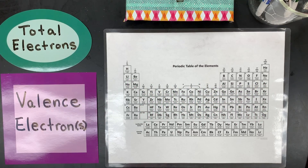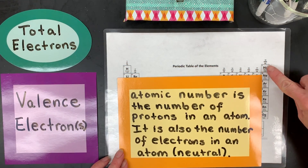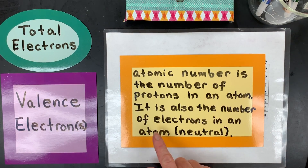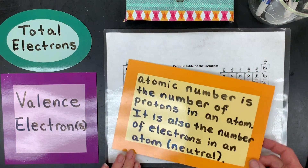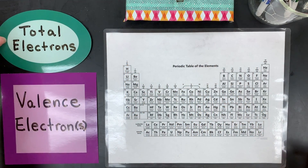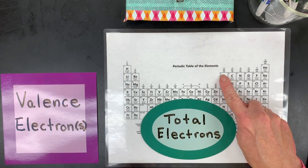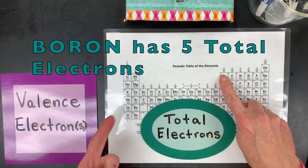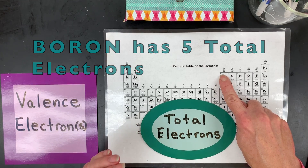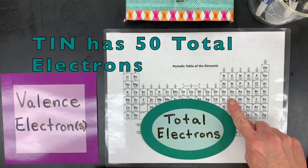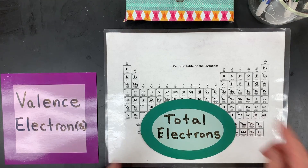The first thing you have to know is that the atomic number on the periodic table, usually in the upper corner, is the number of protons in an atom. It is also the number of electrons in atoms because they're neutral. So the easiest thing to do — that's the total electrons. For boron it would be five, because there's five protons and five electrons to make sure it's neutral. Or for example tin has 50 total electrons and 50 total protons.